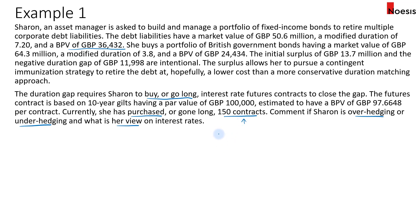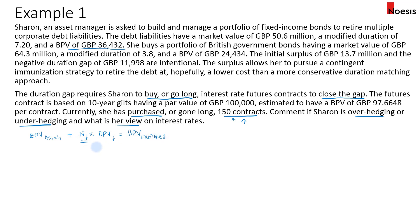We need to calculate how many contracts are actually needed to close the gap, and then compare the 150 contracts that she purchased versus the amount required. The BPV of the assets is not equal to the BPV of the liability, so we will need to add the number of futures contracts multiplied by the BPV of the futures contract, and this has to be equal to the BPV of the liabilities. This is the equation needed to calculate how many contracts are required to close the gap.